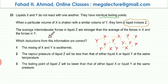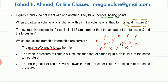The first deduction is that the mixing of X and Y is exothermic. This is definitely true because exothermic means bond formation. The previous intermolecular forces were weak, so very little energy was needed to break them. But the new bonds formed in mixture Z are stronger, and stronger bond formation releases more energy — so the reaction is definitely exothermic.